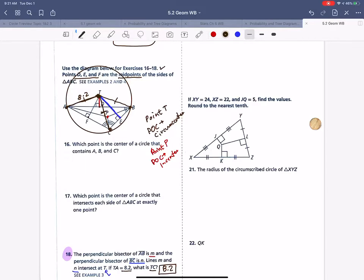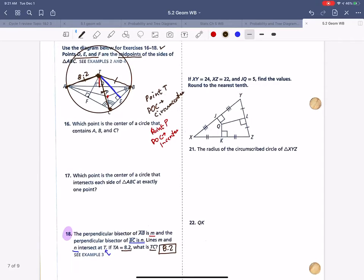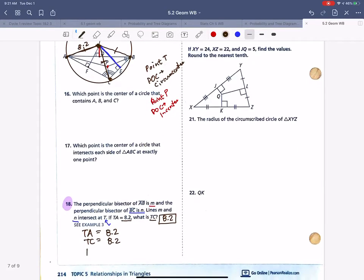It's saying, what if TA is 8.2? So if TA is 8.2, what is TC? Well, TC would also have to be 8.2. So T is the point where it is actually the same distance from all the points of the triangle ABC. TA is a radius, it's 8.2. TC is a radius, that would be 8.2, and TB is a radius, that would be 8.2.